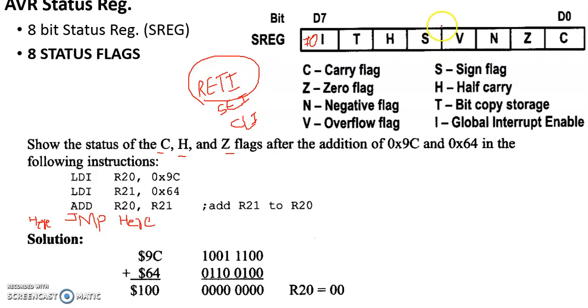Overflow is set and reset. The N flag is set, the sign bit is set, and similar examples apply.